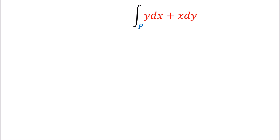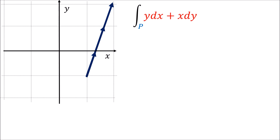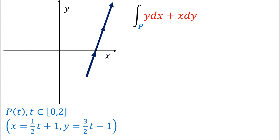Now let's take the example of this other integral. We have both x and y variables, so this integral involves a path p in the 2D plane. This path is parametrized by a time parameter t going from 0 to 2. The path's x coordinate equals one-half t plus 1, and the y coordinate equals three-halves t minus 1. At t equals 0 we start at point (1, −1), and at t equals 2 we end up at point (2, 2).